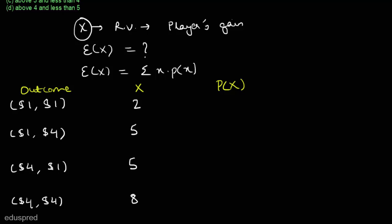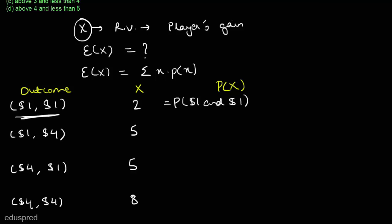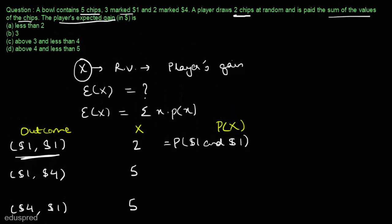Now we have to find the corresponding probabilities. The probability that x equals two is the probability that the first chip is marked one dollar and the second chip is also marked one dollar. The probability that the first chip is marked one dollar is three divided by five, because there are five chips total and three are marked one dollar.